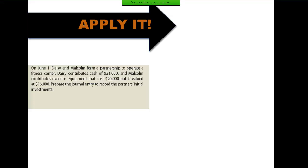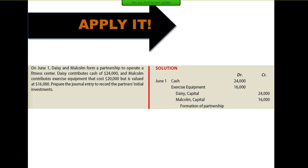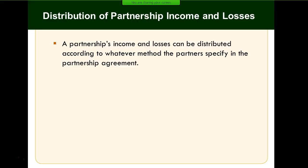On June 1st, Daisy and Malcolm form a partnership to operate a fitness center. Daisy contributes cash of $24,000 and Malcolm contributes exercise equipment that cost $20,000 but is valued at $16,000. We take the fair market value of the equipment: debit cash $24,000, debit exercise equipment $16,000, and credit each respective capital account to show their initial contribution to the partnership.